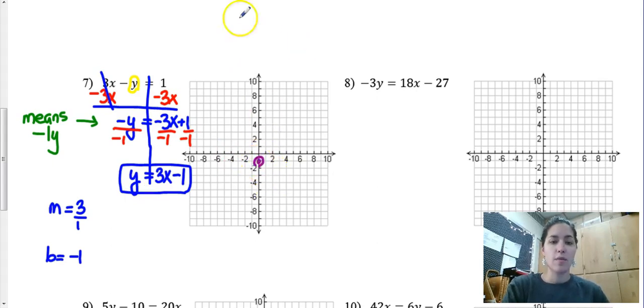And now let's count. Positive 3 means up 3. Positive 1 means right.